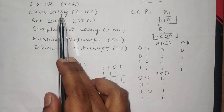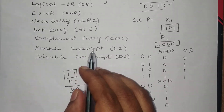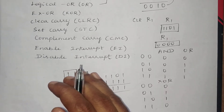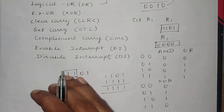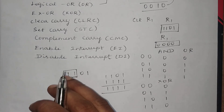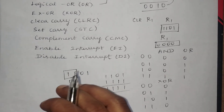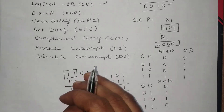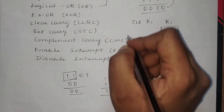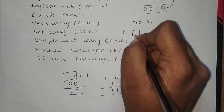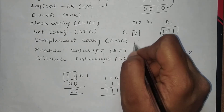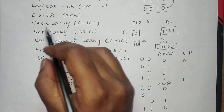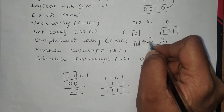The next instruction is clear carry. A flip-flop is used to hold the carry. When you add any two numbers and get a carry, it is stored in the flip-flop. If you want to clear that carry, regardless of whether the carry is 1 or 0, after executing the clear carry instruction the carry value will become 0.